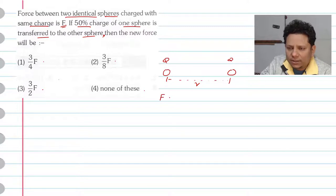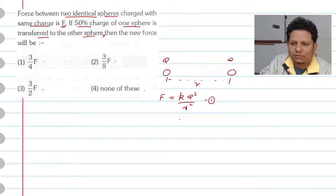So in that case, the electrostatic force of repulsion will be equal to K Q² divided by R². So this is equation number 1, this will be your force F.